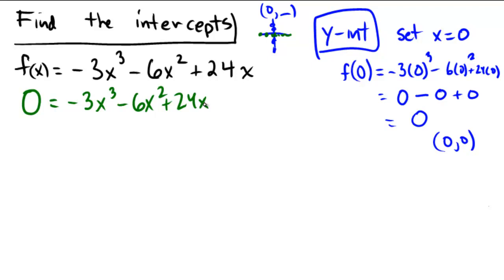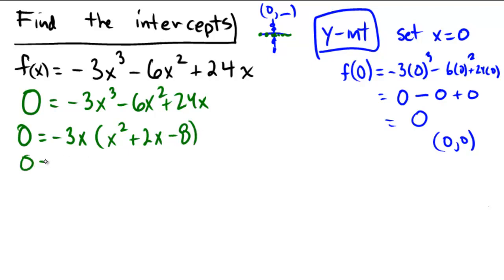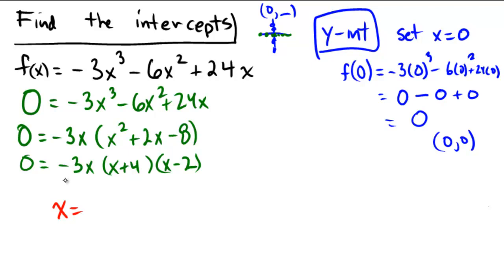Let's begin factoring: zero equals negative three x times (x squared plus 2x minus 8). Factoring a little further, we get negative three x times (x + 4) times (x − 2). Now ask yourself: what values of x would cause this product to become zero? Well, x could equal zero, x could equal negative four, or x could equal two.